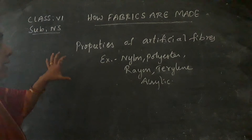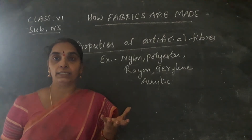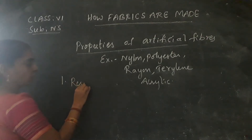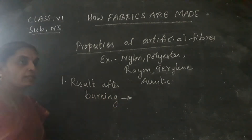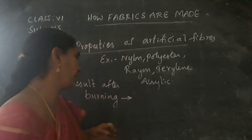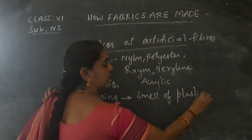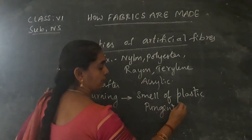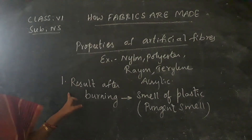So here you are going to learn about the properties. Since artificial fibers are made from chemicals, when they are burnt they give a pungent smell. If you see the result after burning, they may turn to ash or you see the nature of the chemicals — that is the plastic smell. The chemicals released from it give a plastic or pungent smell. That is the main property when burning artificial fibers.